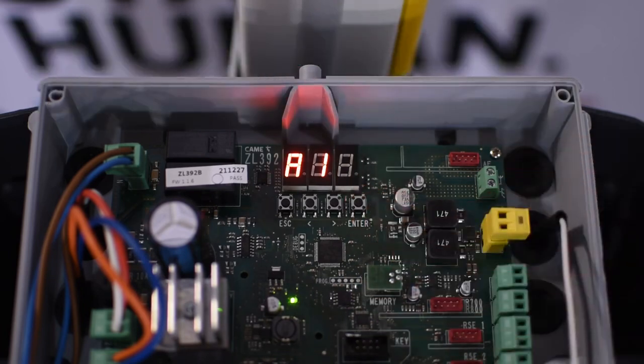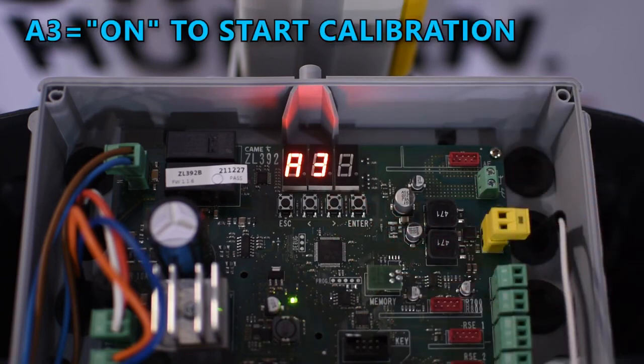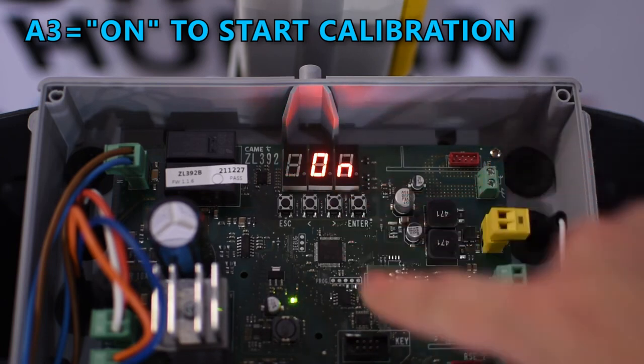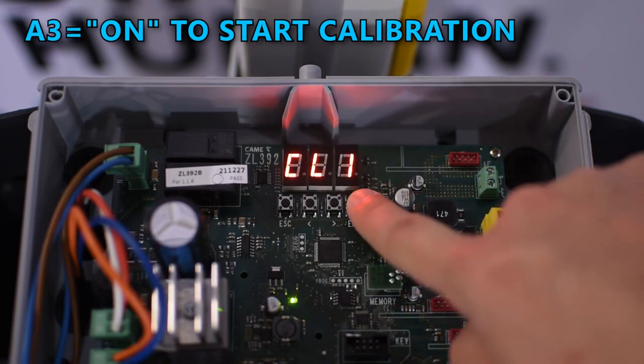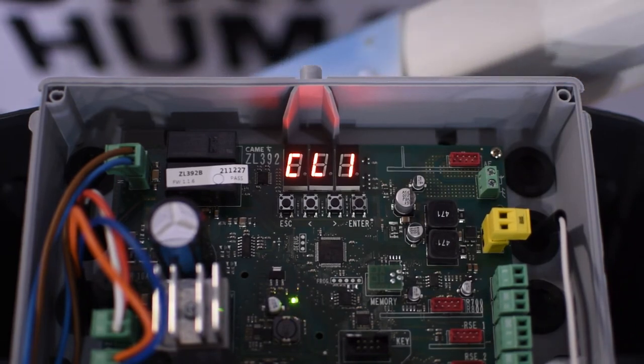Now we are ready to do a travel calibration. So go to A3 and press enter. Then use the arrows until it says on and press enter. It will start the calibration procedure by closing and then opening by itself.